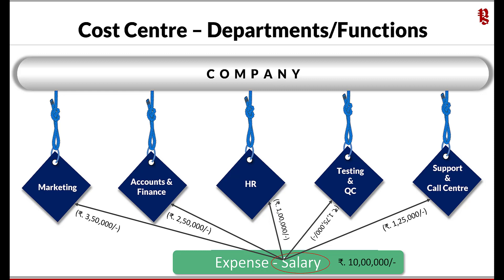To address this requirement of businesses, Tally Prime has an advanced feature called cost category. Cost categories are parallel sets of cost centers where an amount of expense or income in the voucher can be allocated to more than one set of cost centers.